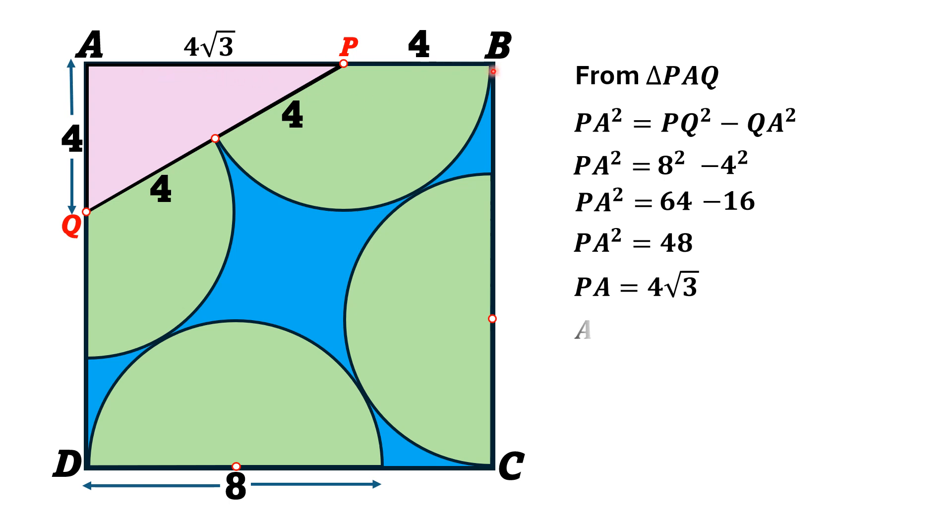Now, AB length which is the side of square is equal to AP plus PB and AP is equal to 4 square root of 3 and PB is 4 taking 4 common. So, AB is equal to 4 times 1 plus square root of 3.